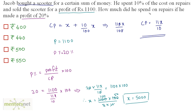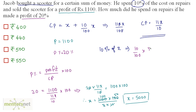The amount he spent on repairs is what is asked. He spent 10% of the amount on repairs, so we want 10% of X, which is 10/100 times 5000. This equals 500 rupees — that is the amount he spent on repairs. So option C is the right answer.